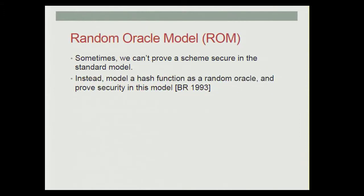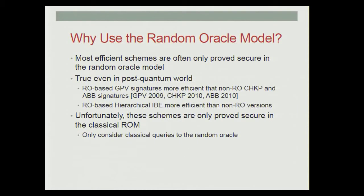Sometimes we can't prove our favorite schemes are secure in the standard model. Oftentimes what we do instead is model a hash function as a random oracle and prove security in this model. We often have to resort to the random oracle model because our most efficient schemes are frequently only provably secure in this model, and this is true even in the post-quantum world.